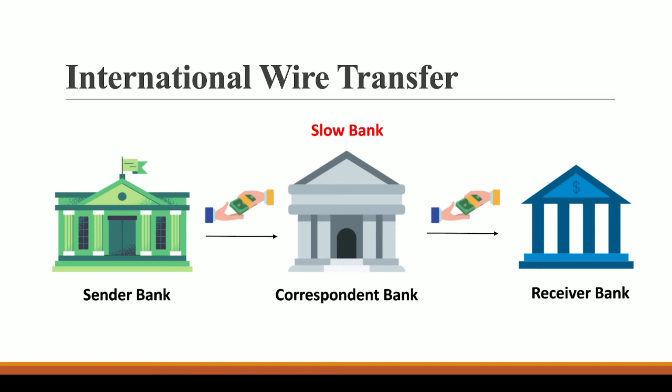Also, this process can be slow — it can take two to three days or even up to seven to ten days, depending on how slow the intermediate banks are. With blockchain, transactions are very fast — an international transaction can be done in minutes. On top of that, the transaction fees are very low. Cryptocurrencies can be transferred from one place to another in much less time and with much lower transaction fees.